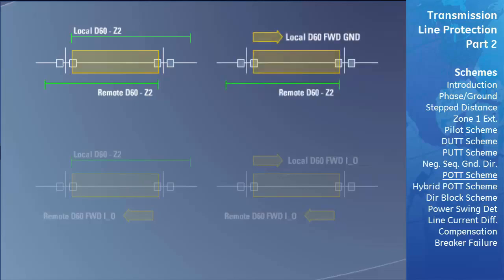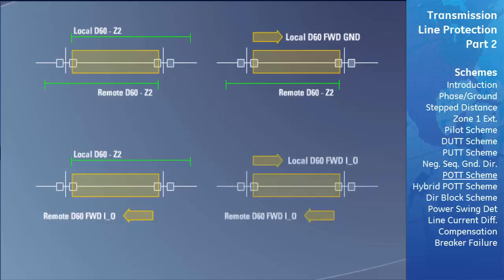In diagram 1, if Zone 2 of both relays identifies a fault, it is a clear indication the fault is on the transmission line and both relays trip. In diagram 2, the remote Zone 2 indicates the fault is to the left of the remote relay, and the forward flow of ground current seen by the local relay indicates it is to the right—therefore on the transmission line, and both relays trip. In diagram 3, forward flowing ground current at the remote relay and Zone 2 pickup at the local relay confirms the fault is on the line and both breakers trip. In diagram 4, ground current flowing into the transmission line as detected by both relays confirms the line is faulted and both breakers trip.